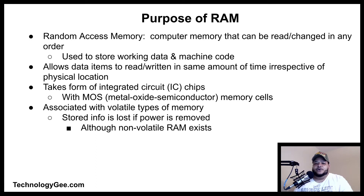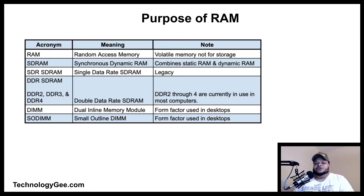RAM is normally associated with volatile types of memory — stored information is lost if power is removed, although non-volatile RAM has also been developed. There is a chart of RAM available on my website, Technology G, in case you want to read up on the latest and greatest concerning RAM.